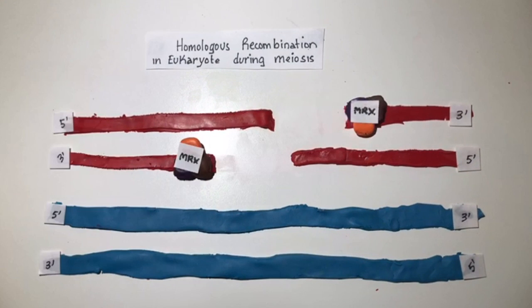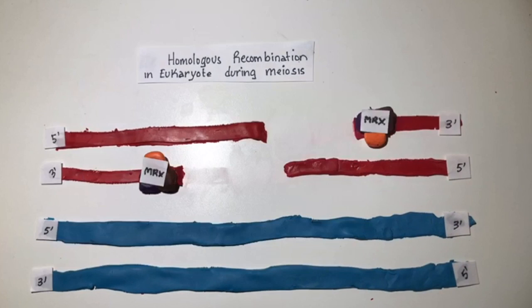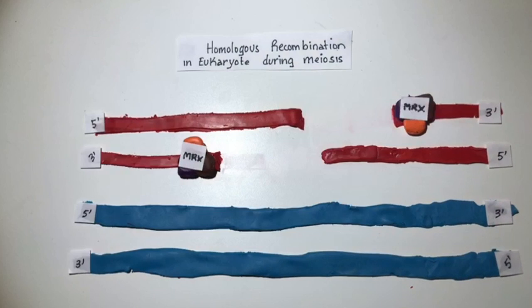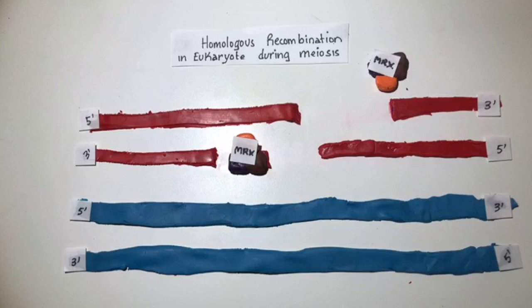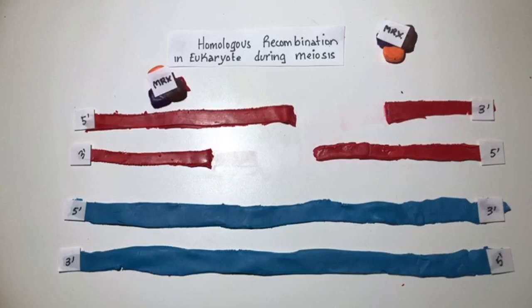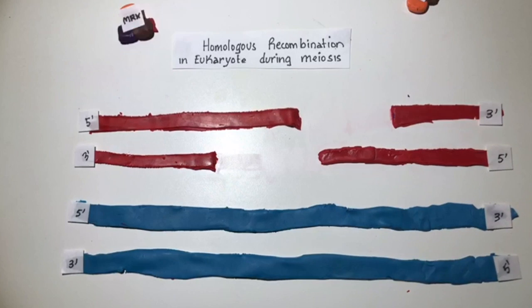The MRX-dependent 5' to 3' resection generates long single-stranded DNA tails with 3' ends that are often 1 kilobase or longer.